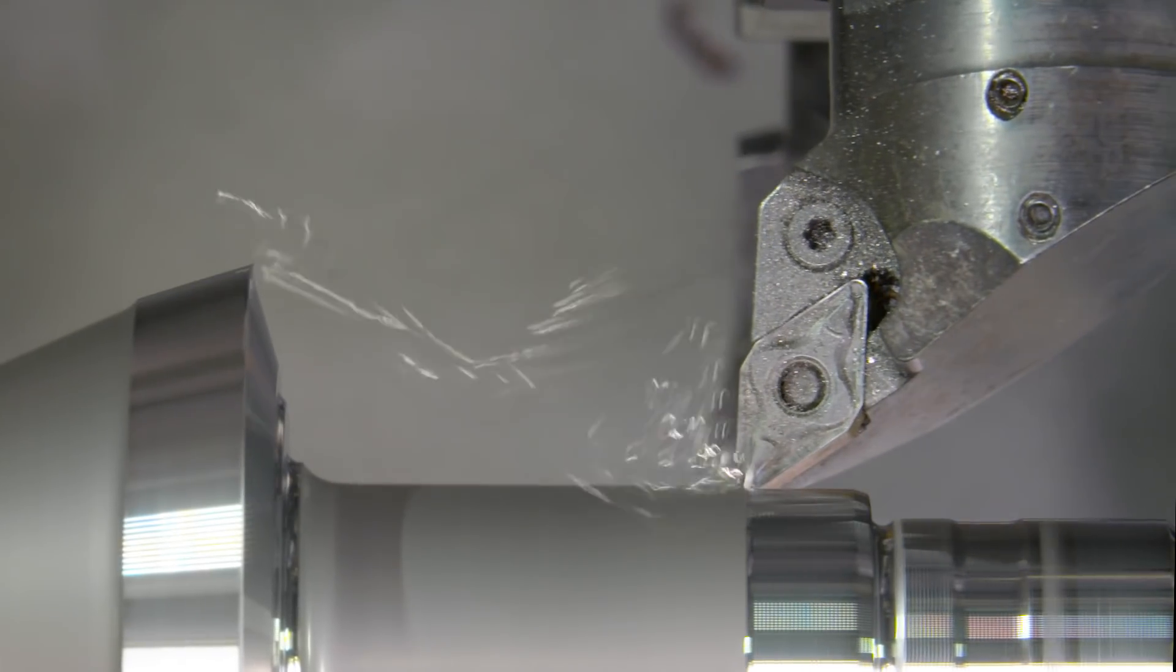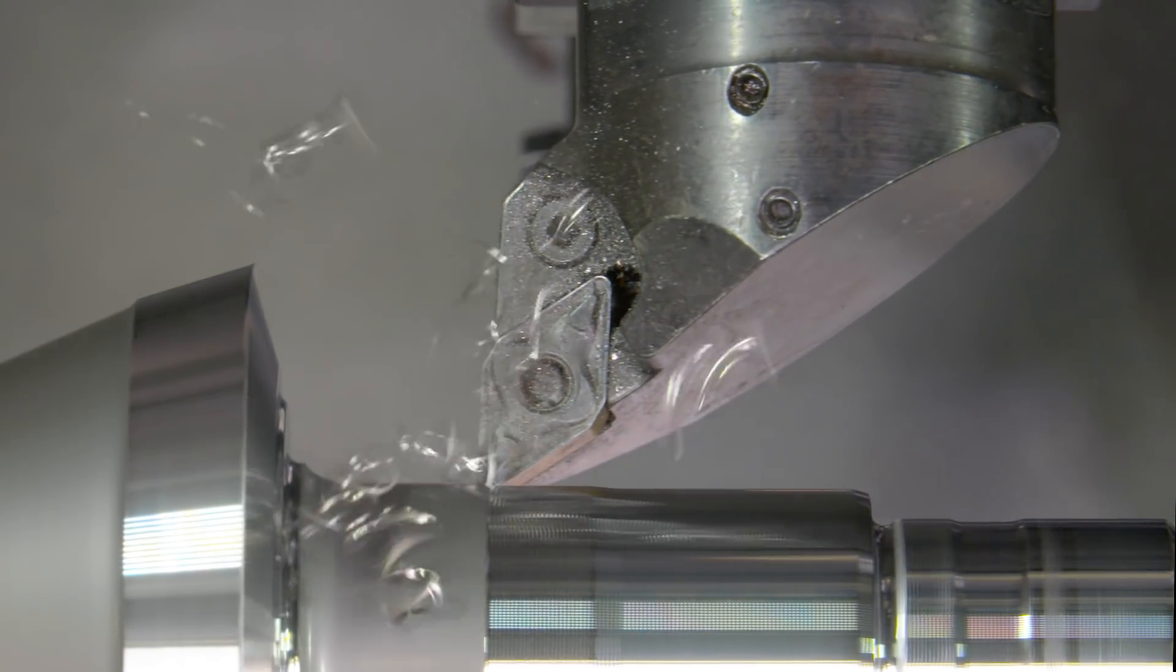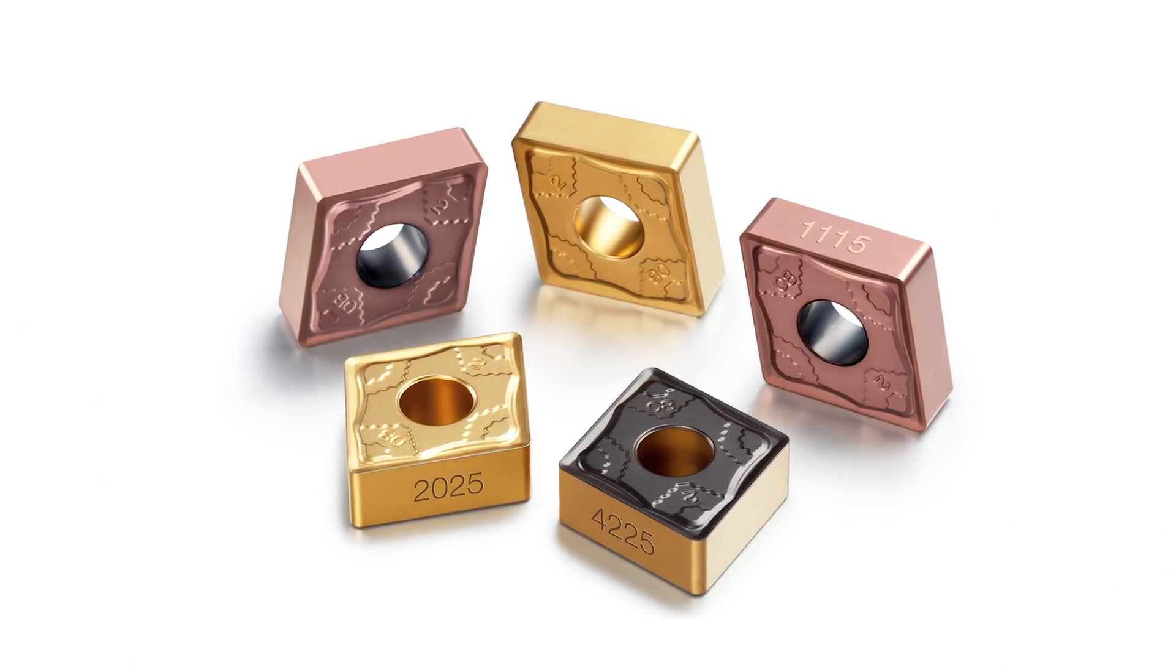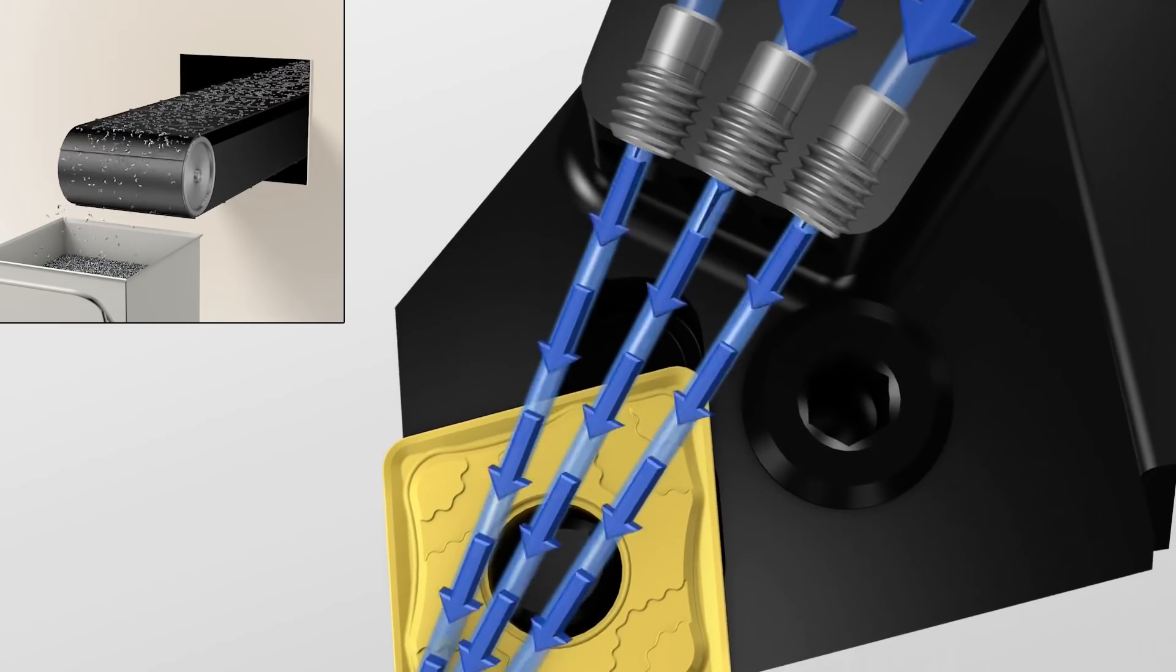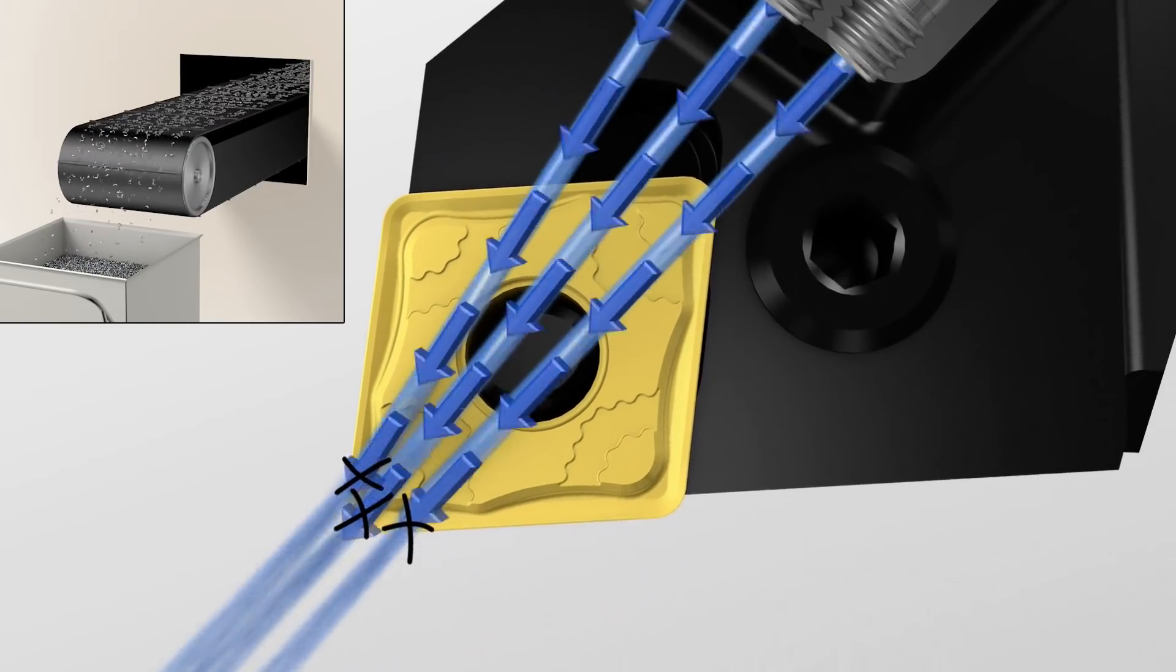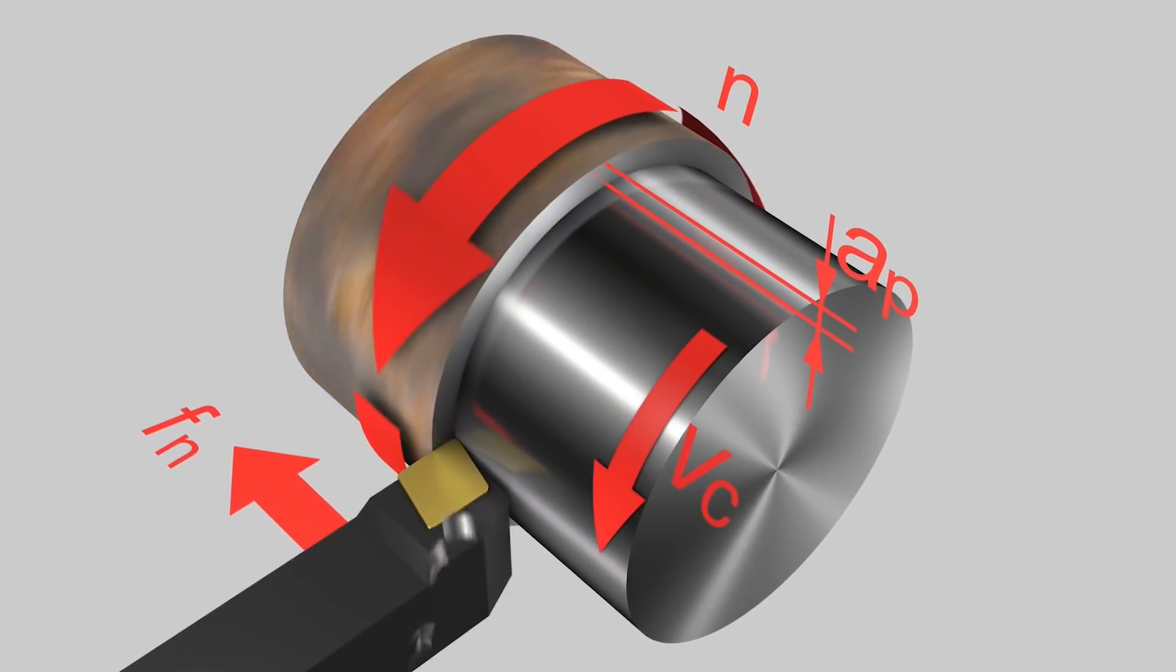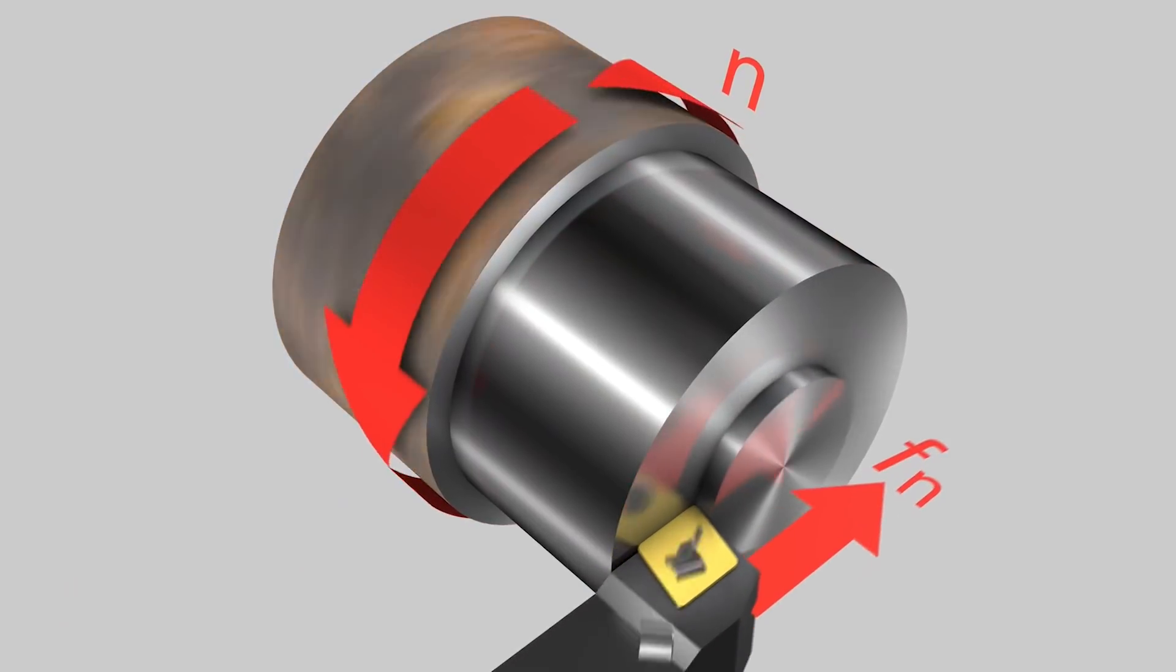Additionally, the operator also needs to factor in the feed, depth of cut, and insert selection. Consider selecting a tool with precision coolant paired with an insert geometry that offers better chip breaking capability. This will allow you to increase both the feed and depth of cut, resulting in much higher productivity.